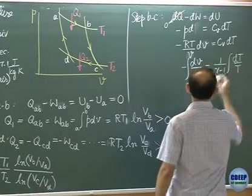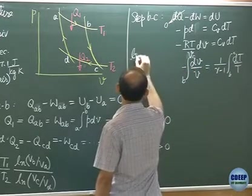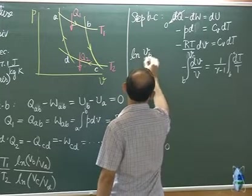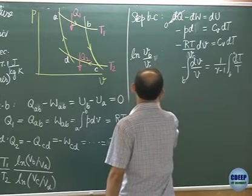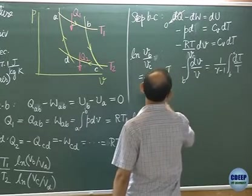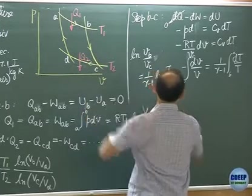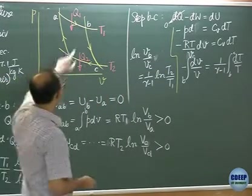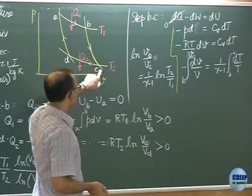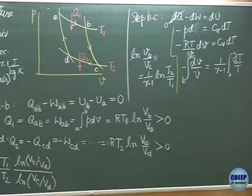Now, if we integrate from b to c, let me write that answer here. We have ln, vb to c, vb over vc equal to 1 over gamma minus 1 ln Tc over Td. Now, I made a mistake, Tc by T, ok, T2 over T1. Is it correct? Vb and vc, vb is less than vc and T2 is less than T1. So, the minus has been adjusted in such a way that they match up.